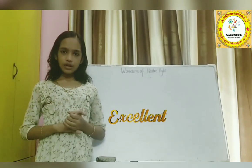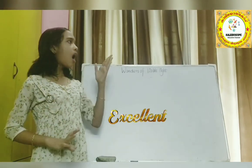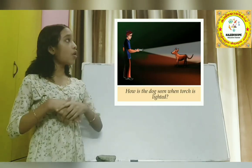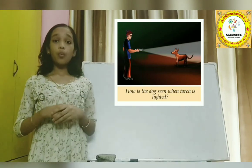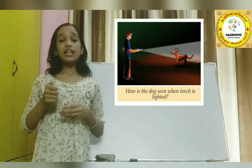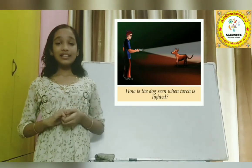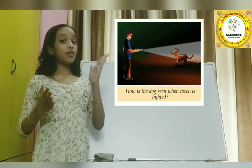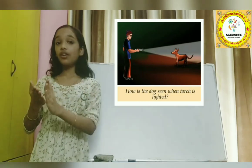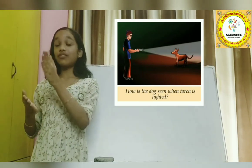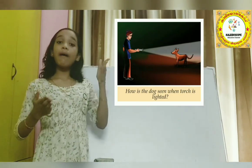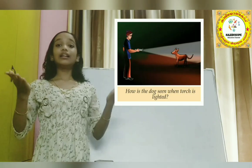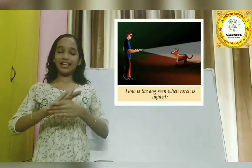Can you say how is the dog seen when torchlight is lit? Yes! When light falls on the dog, it is reflected into the man's eyes. Then the dog is seen.